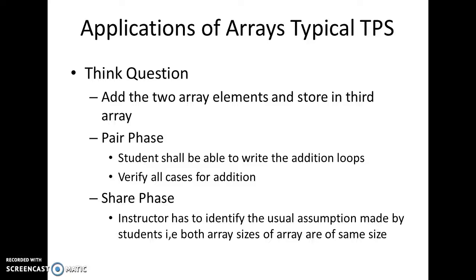The question is: add two array elements and store the result in a third array. That means take two arrays, add the zeroth element of the first array with the zeroth element of the second array and store the sum in the zeroth element of the third array. Similarly, add the first element of the first array with the first element of the second array and store the result in the first element of the third array. You can use a simple for loop as a hint — take five minutes to work on this.